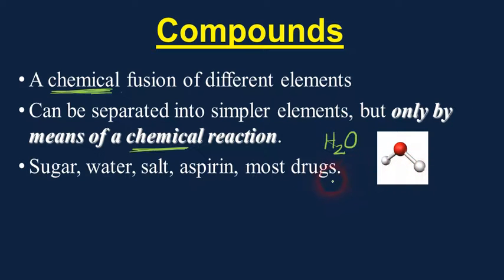You can take water and separate it into its component elements, hydrogen and oxygen, but you have to have a chemical reaction. The most common way to do this is to run a current of electricity through the water, and it can be done using something as simple as a 9-volt battery. You can separate water out into hydrogen and oxygen and see those component elements. This process is called electrolysis.